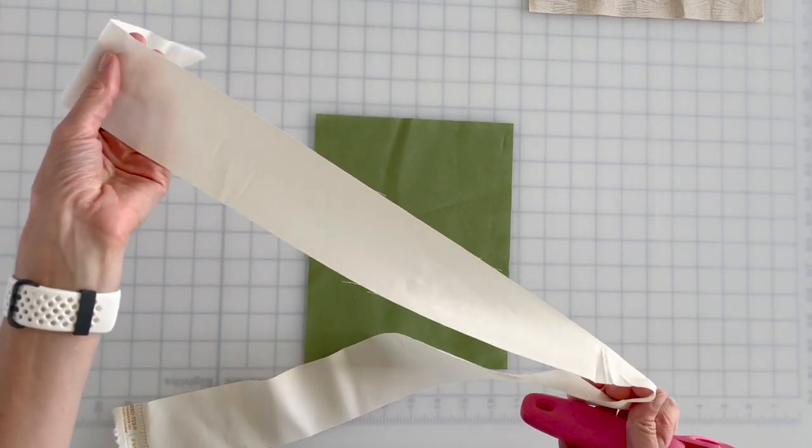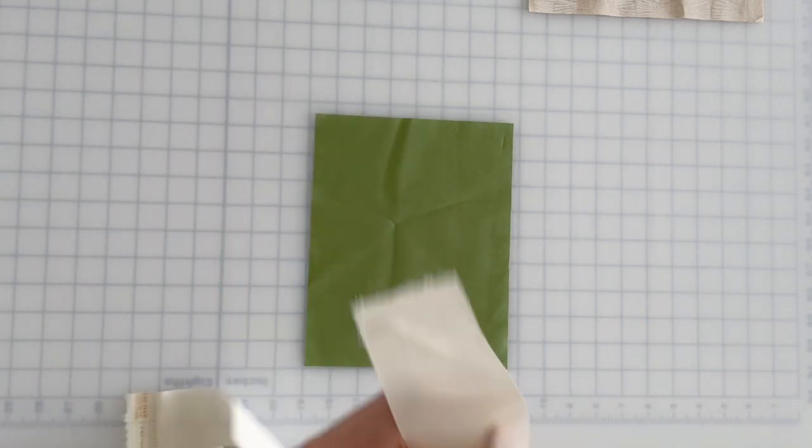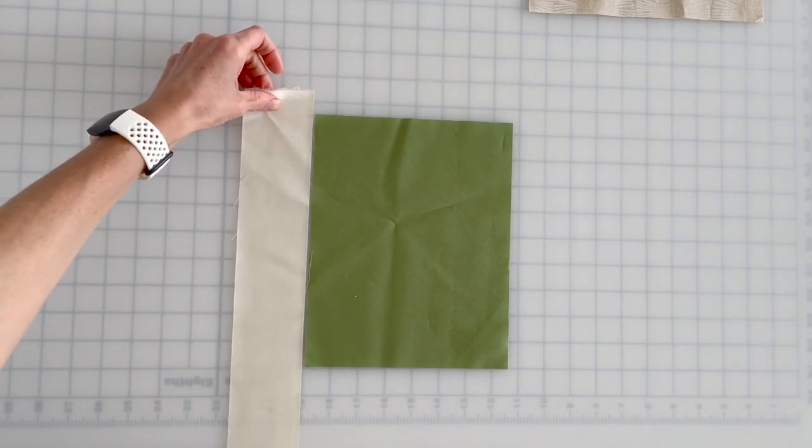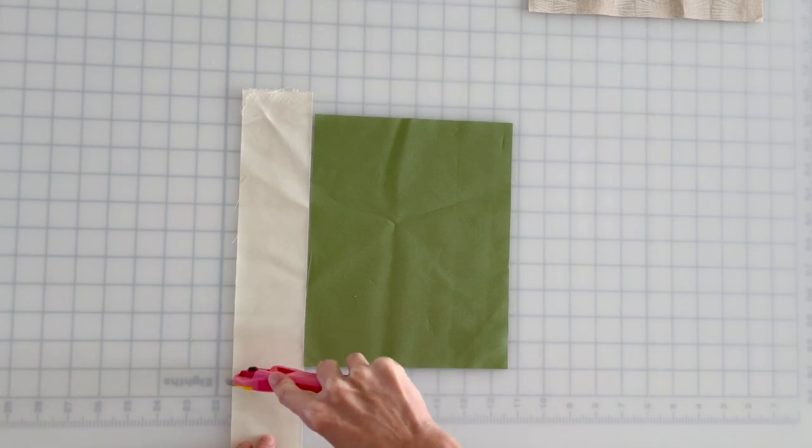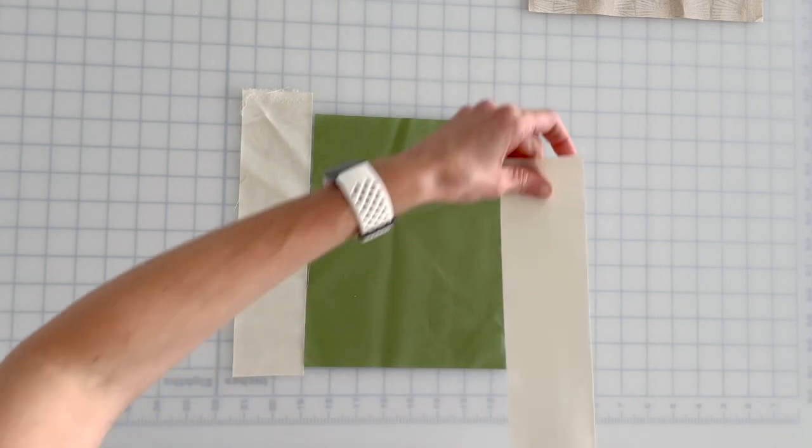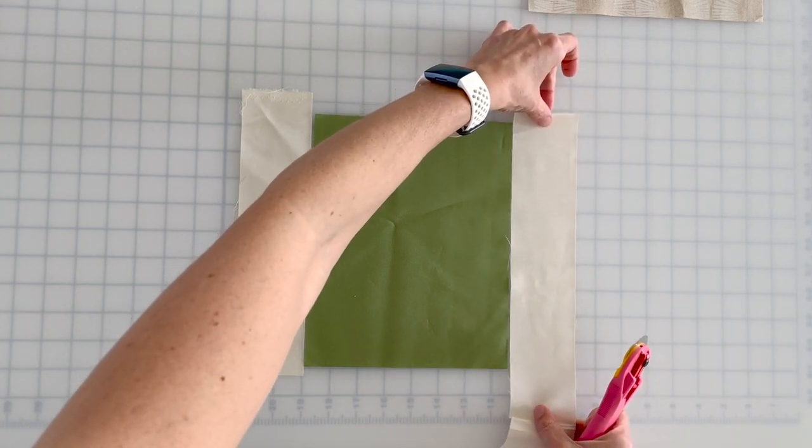So I just have a width of fabric strip and I'm going to lay it out so it has a little bit of overhang, and then I'm going to trim it. I'm going to do that one more time on the other side.